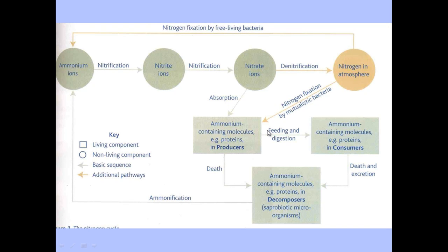In summary, producers contain ammonium containing molecules. Consumers or animals also contain the same, and when they die, those ammonium containing molecules are broken down or digested by decomposers using saprobiotic digestion. Remember, saprobiotic means the bacteria excrete enzymes outside of their cells to digest the proteins found within the dead material, which they can then absorb. Those compounds are then converted into ammonium via ammonification. In the next video, we will be looking at nitrification and denitrification.